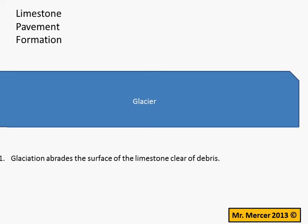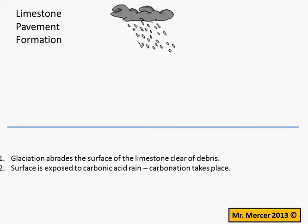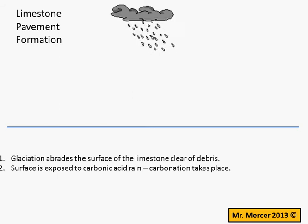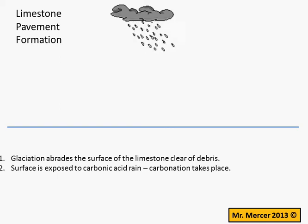In stage 2 we see that the glacier has disappeared. It has melted away and is no longer with us. The climate has warmed up and rain is therefore able to fall upon the limestone. This rain has a special name — it's called carbonic acid rain.